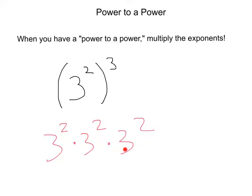Now, because we know when we multiply having the same base, we could add these together. So we have our exponents 2 plus 2 plus 2, which would give us 3 to the sixth power, right?